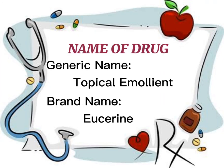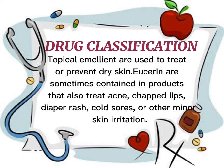Name of drug: its generic name is topical emollient and its brand name is Eucerin. Drug classification: topical emollients are used to treat or prevent dry skin. Eucerin is sometimes contained in products that also treat acne, chapped lips, diaper rash, cold sores, or other minor skin irritation.